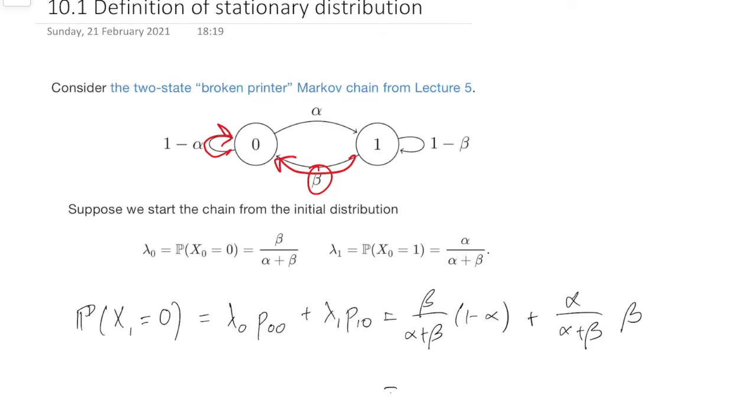So if we put that all over a common denominator, what do we have? We have beta minus alpha beta plus alpha beta on the top. Alpha plus beta on the bottom. And that all comes out as beta over alpha plus beta. But note that's exactly the same probability as it was the time before. So the probability we're in state 1 at time 0 was lambda 0. The probability we're in state 0 at time 1 is also lambda 0.